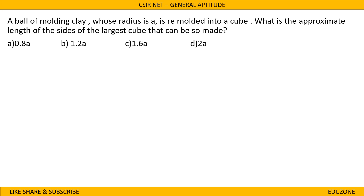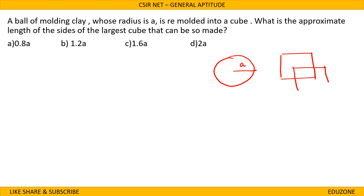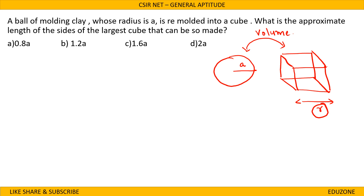Third question: a ball of moulding clay whose radius is A is remoulded into a cube. What is the approximate length of sides of the largest cube that can be made? The sphere has radius A and is remoulded into a cube with side length R. The concept is that when one shape is moulded into another, the volume remains the same. Volume of sphere is 4 by 3 pi A cube.